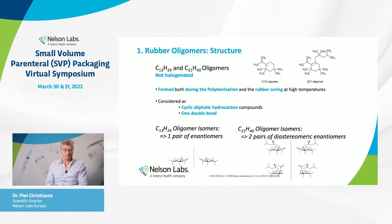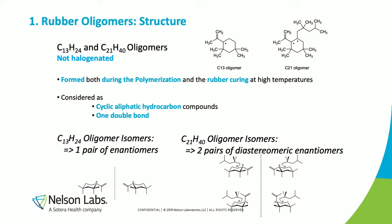Let's start with their structure. These rubber oligomers actually have two different oligomers: the C13 oligomer and the C21 oligomer when they are not halogenated. They are typically cyclic aliphatic hydrocarbon compounds with one double bond, formed during the polymerization process of the butyl rubber or during rubber curing at high temperatures. Typically, these oligomers are a mixture of isomers — for the C13 oligomer, you have one pair of enantiomers, and for the C21 oligomer, you have two pairs of diastereomeric enantiomers, as shown on this slide.